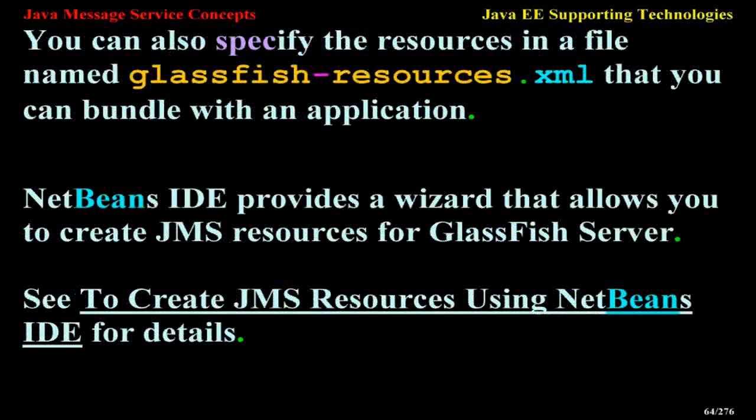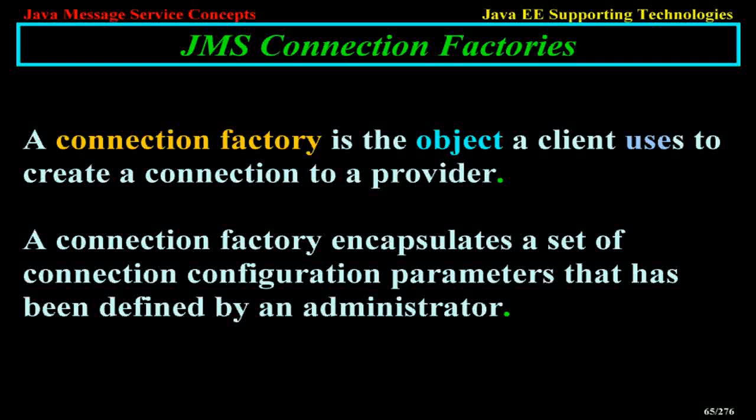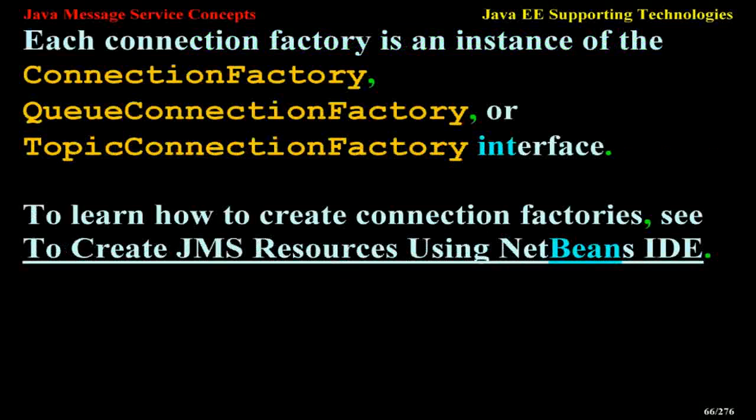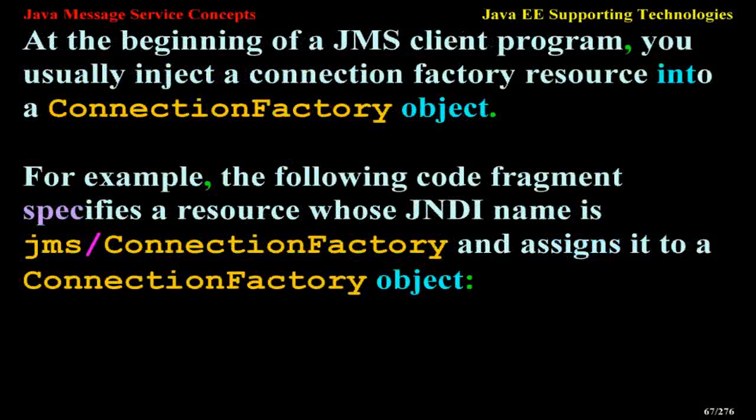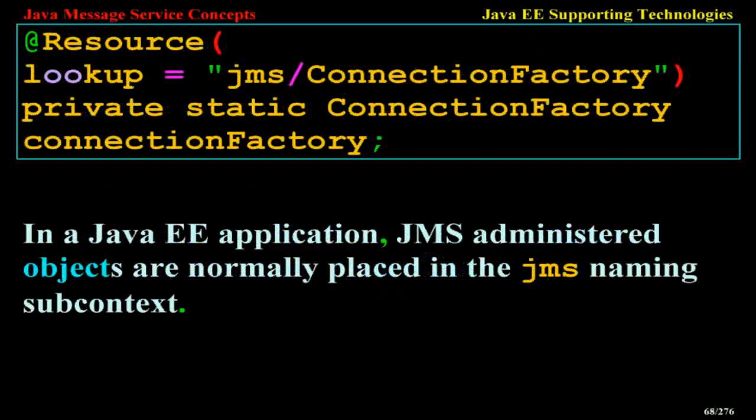JMS Connection Factories. A connection factory is the object a client uses to create a connection to a provider. A connection factory encapsulates a set of connection configuration parameters defined by an administrator. Each connection factory is an instance of the ConnectionFactory, QueueConnectionFactory, or TopicConnectionFactory interface. At the beginning of a JMS client program, you usually inject a connection factory resource into a connection factory object. For example, the following code fragment specifies a resource whose JNDI name is JMS/ConnectionFactory and assigns it to a connection factory object: @Resource(lookup="JMS/ConnectionFactory") private static ConnectionFactory connectionFactory. In a Java EE application, JMS-administered objects are normally placed in the JMS naming subcontext.